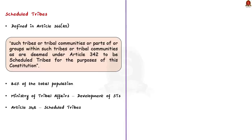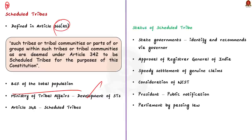The term Scheduled Tribe is defined in Article 366, Clause 25 of the Indian Constitution. Scheduled tribes constitute about 8.6% of the total population in India, and the Ministry of Tribal Affairs is responsible for them. The procedure for conferring Scheduled Tribe status: firstly, the concerned state government identifies eligible tribes and recommends through the governor. Then the proposal goes to the Registrar General of India; if approved, the National Commission for Scheduled Tribes considers the claim. If they give the green light, the President issues a public notification, and then Parliament by passing a law can confer the Scheduled Tribe status.